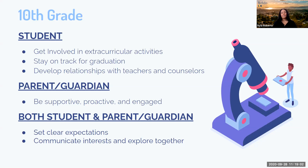We want the student and the parent to begin setting clear expectations — making sure there is a clear plan for after high school and that parents are finding ways to help support students through this plan. Communicate interests and explore together. At this point students may not know what they'd like to study after high school, but asking questions can help discover different activities they're interested in. This could include going on college visits or participating in online programs to help the student understand what they would like to do for their future.